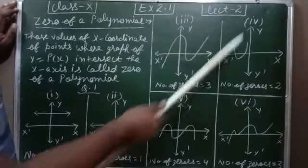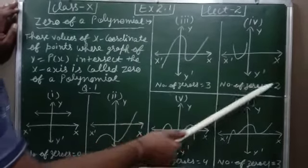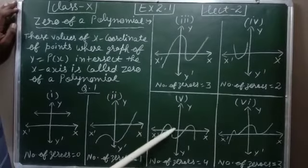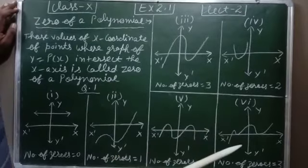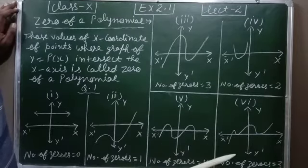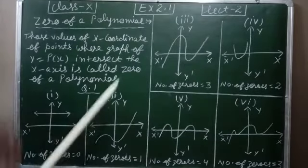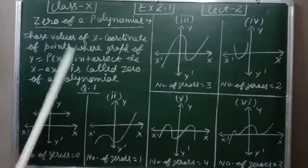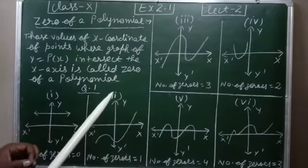In the third part, the graph intersects the x-axis at three points, so the number of zeros is three. In the fourth part, the graph intersects the x-axis at two points, so the number of zeros are two. In the fifth part, at four points the graph intersects the x-axis, so the number of zeros are four. In the last part, the graph intersects at three points, so the number of zeros are three. Generally in the exam you can get one question of one mark from here.